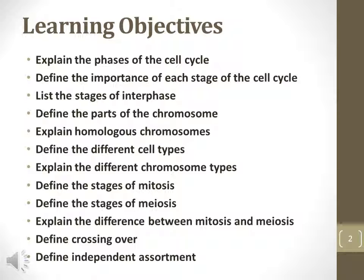Those processes are responsible for asexual division and sexual division, respectively. The events of sexual cell division are more complex than asexual cell division and involve a process called crossing over, in which maternal and paternal chromosomes rearrange fragments of DNA between each other. The processes of crossing over and independent assortment will be further discussed in the next portion of this module.